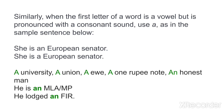Another exception: 'She is a European senator' — not 'an European', because 'European' begins with a consonant sound 'Yu'. Similarly, 'a university', 'a union' — even though these start with a vowel letter, the sound is a consonant, so we use 'a'.